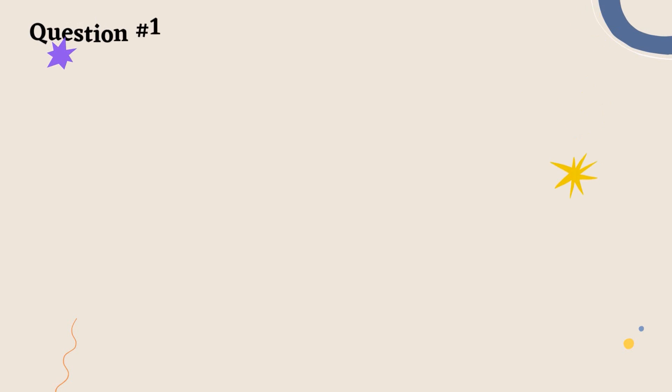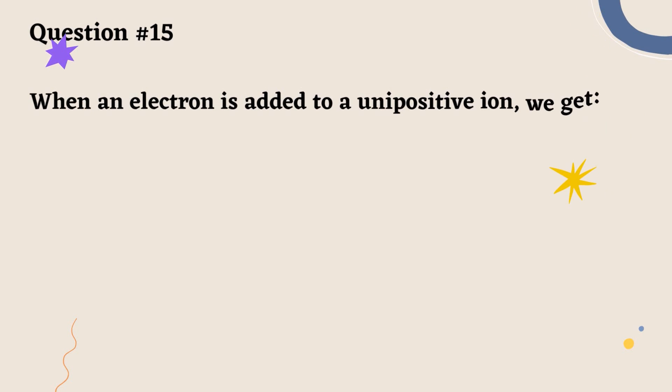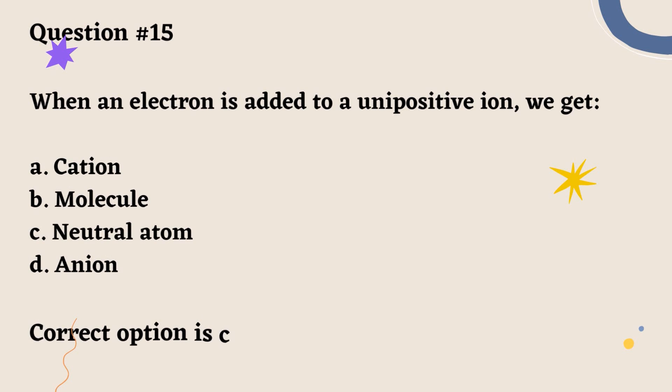Question number 15. When an electron is added to a unipositive ion we get: A. Cation. B. Molecule. C. Neutral atom. D. Anion. Correct option is C.